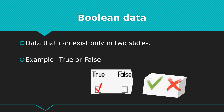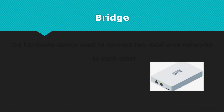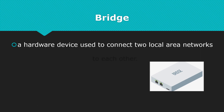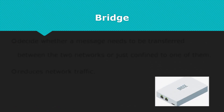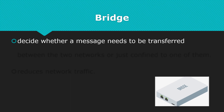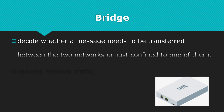A bridge is a hardware device used to connect two local area networks to each other. The purpose of a bridge is to decide whether a message needs to be transferred between the two networks or just confined to one of them. This reduces network traffic.